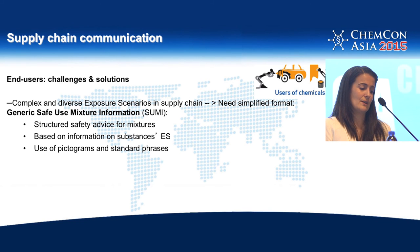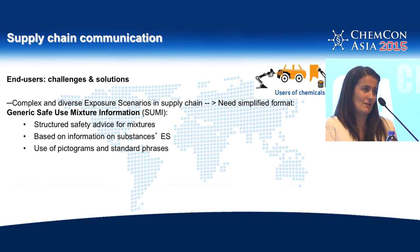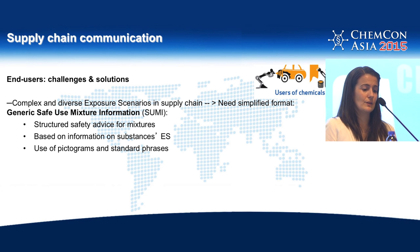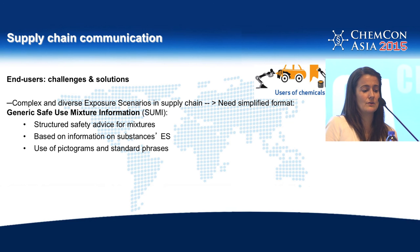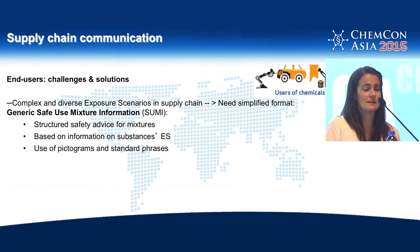We then reach the end users — the end of the supply chain. They have their own challenges, and they need one solution: a simple format that encompasses all the safe use information that has been generated down the supply chain. Industry has put together a format called SUMI — the Generic Safe Use Mixture Information — recommended for this very end of the supply chain. It's just one page. It has structured information based on the substance exposure scenario, but with pictograms and standard phrases, so that it's hopefully useful for the workers using the chemicals.